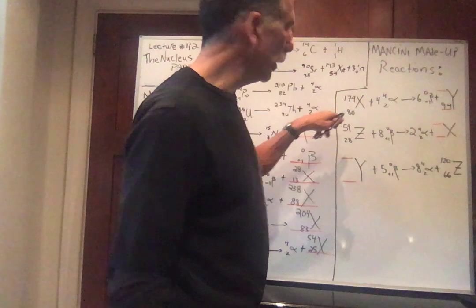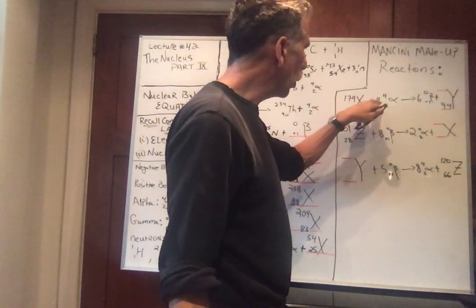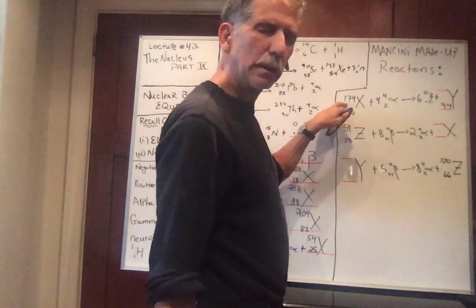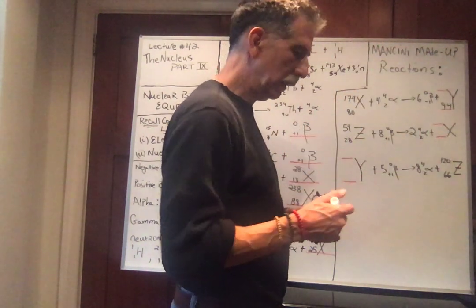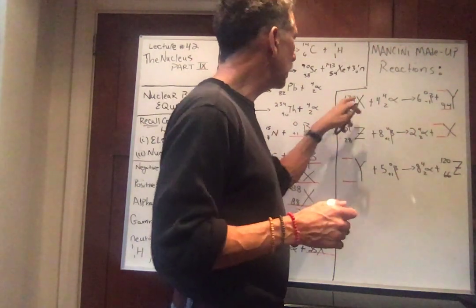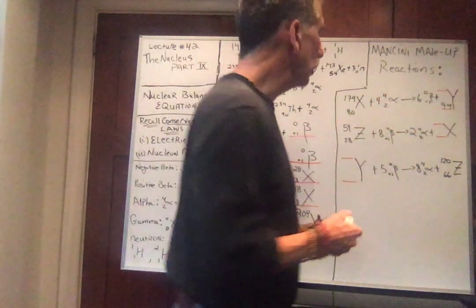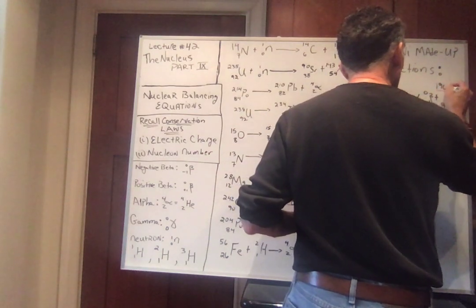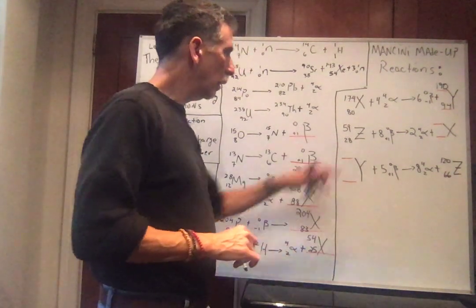Let's look at the nucleon number. 174 plus 4 times 4 is 16. 16 plus 174 is 190. So the top needs to be 190. 6 times 0 is 0. So here we have 190. Fantastic. Really not that hard, is it?